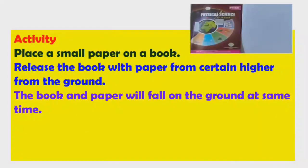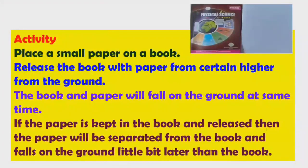Here we can see our physics textbook and a small piece of paper. If the paper is kept on top of the book and released, the paper will be separated from the book and fall on the ground a little bit later than the book. So the paper will reach the ground a little bit later than the book.